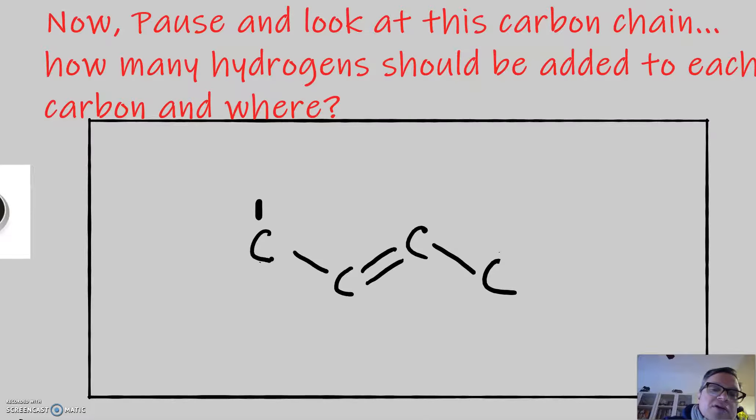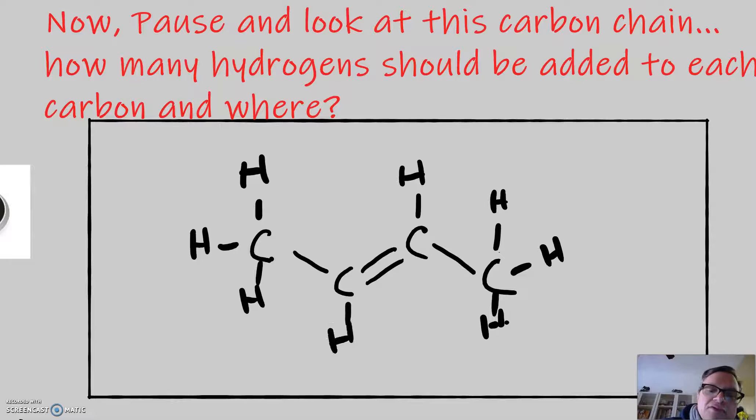So, this is a single bonded carbon on the end, which means it needs three hydrogens. Same way with this one on this side. That gives the carbon four bonds and each hydrogen one. Now, these two central carbons have three bonds already, so that means they can only take one more hydrogen. Pause and take a look at that and make sure you understand it.